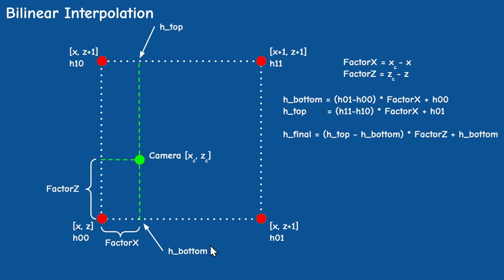This will give us the height at ground level, so you probably want to offset this by the height of the character — which can be, you know, like a dwarf in Lord of the Rings or Optimus Prime.